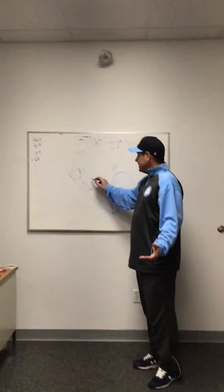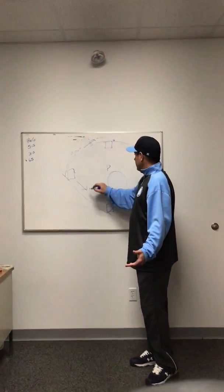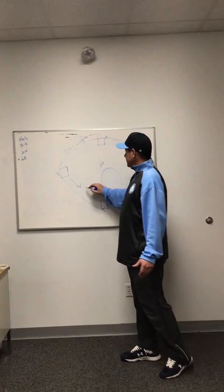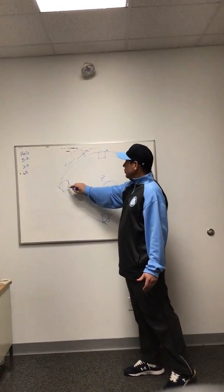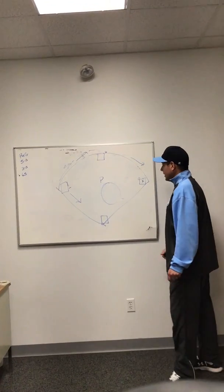Again, if the ball is not bunted, third baseman with the guy on first, if the ball is not bunted to you, you better get back and cover that bag because right now the shortstop is going in that direction, so you're going to cover that bag.